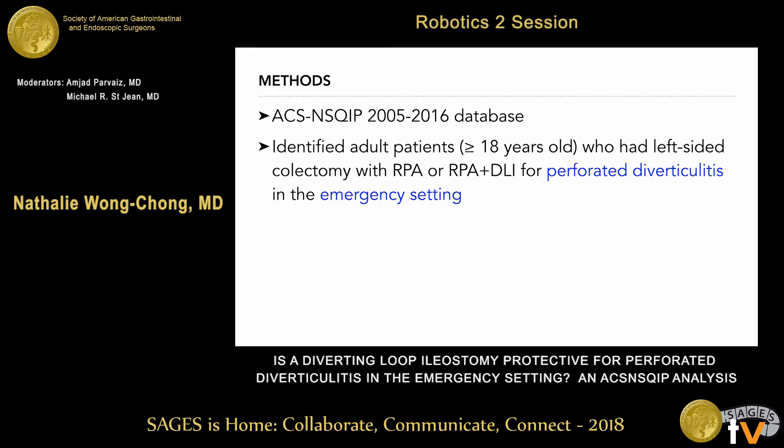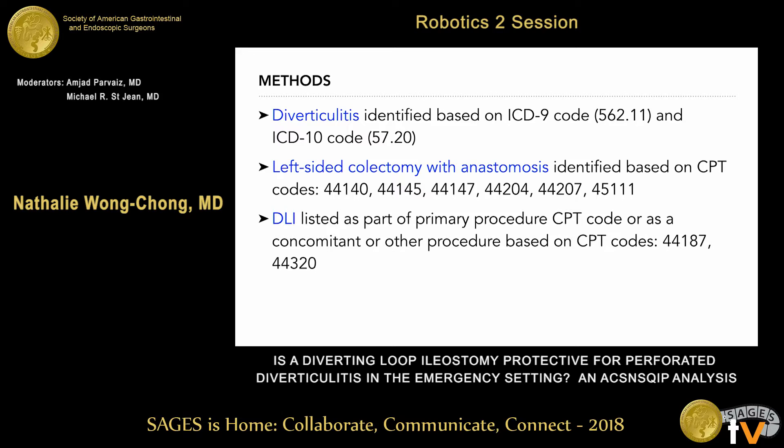We queried the American College of Surgeons National Surgical Quality Improvement Program over the years 2005 to 2016, looking at all adult patients who had left-sided colectomy with resection and primary anastomosis plus or minus a diverting loop ileostomy for perforated diverticulitis in the emergency setting. Diverticulitis was identified based on ICD-9 and ICD-10 codes, and the left-sided colectomy with anastomosis was identified based on CPT codes for the primary procedure. A diverting loop ileostomy was identified either as part of a primary procedure CPT code or as a concomitant or other procedure CPT code.